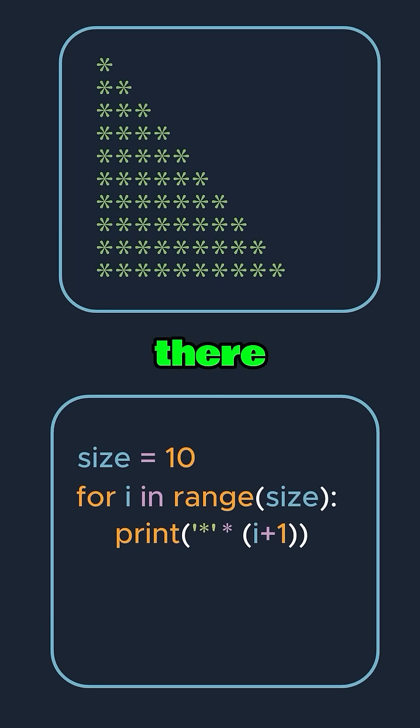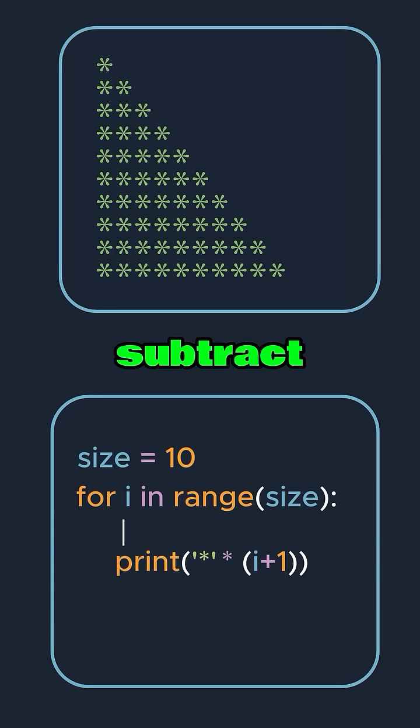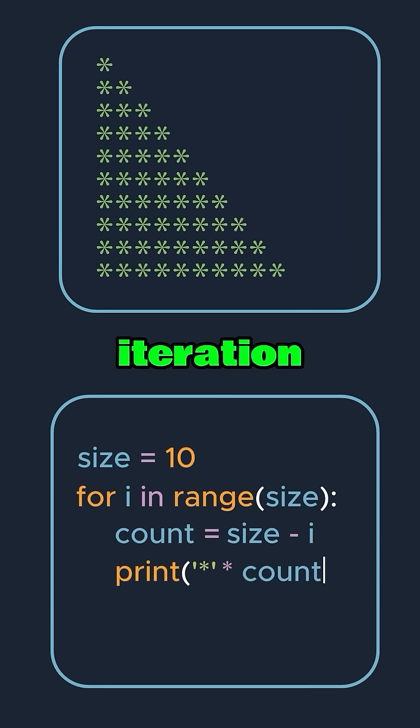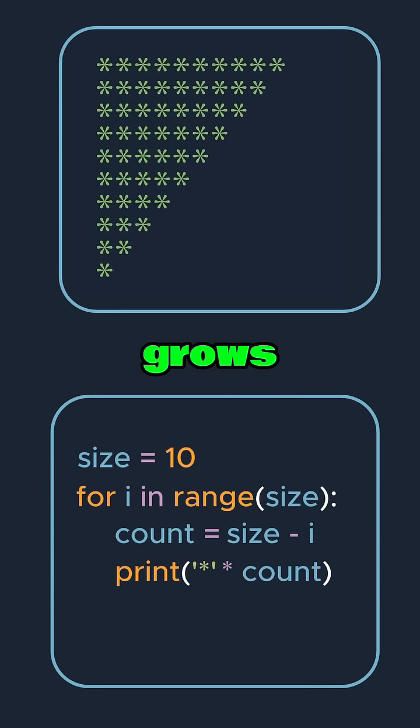there is. Just subtract i from size in each iteration. As i grows, the number of stars decreases row by row.